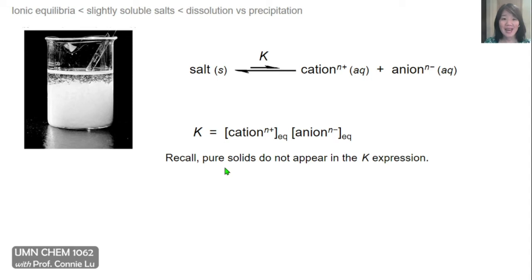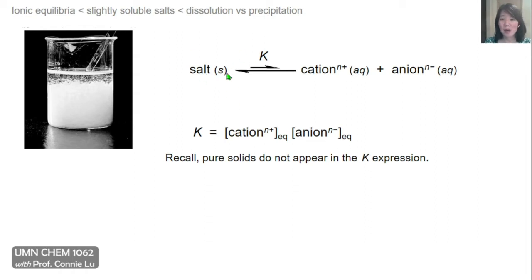Thinking about dissolution as an equilibrium process, we can focus on this reaction and write its equilibrium constant expression, as we would normally do. So here we have our products and the concentrations of the cation and the anion at equilibrium. Normally we would divide this over the reactant, which would be the salt. But because the salt is a pure solid, it doesn't appear in the expression for the equilibrium constant, because pure solids always have an active concentration of 1. So here the equilibrium constant is equal to a product of the soluble ions, which is why this equilibrium constant is often called the solubility product.